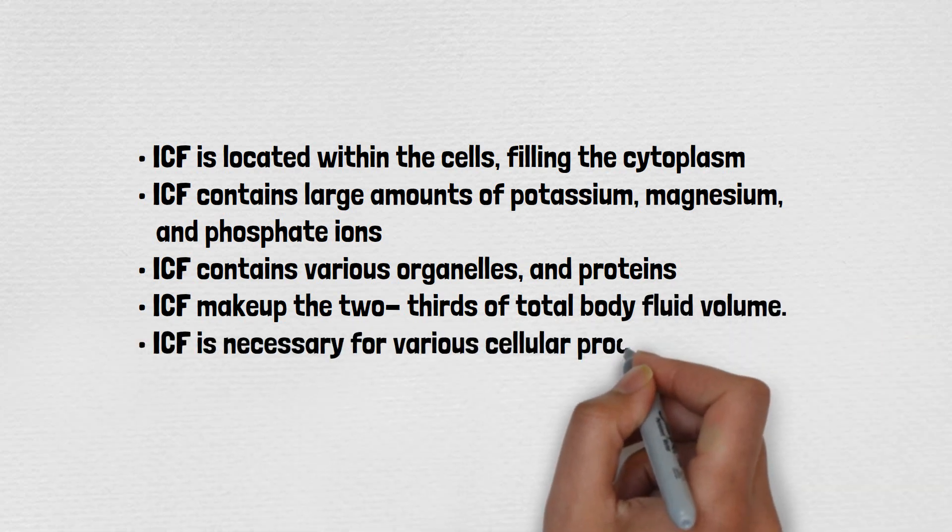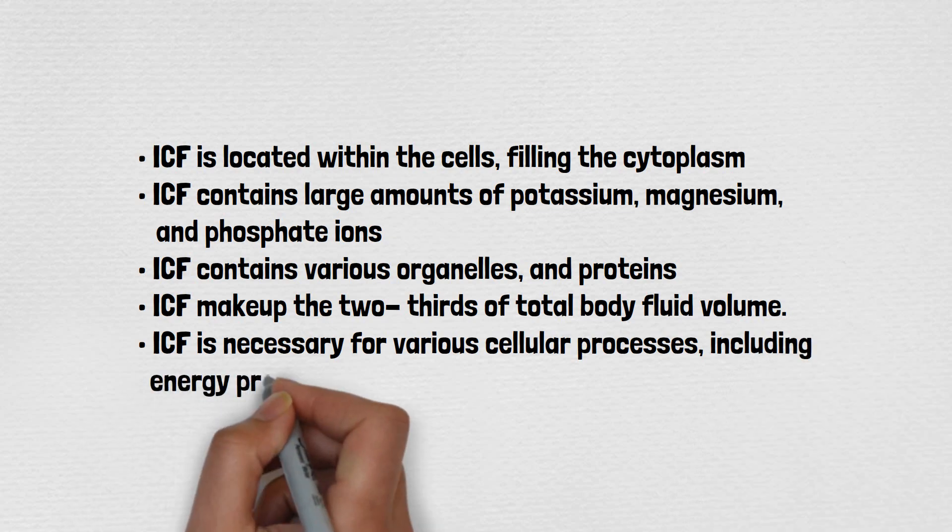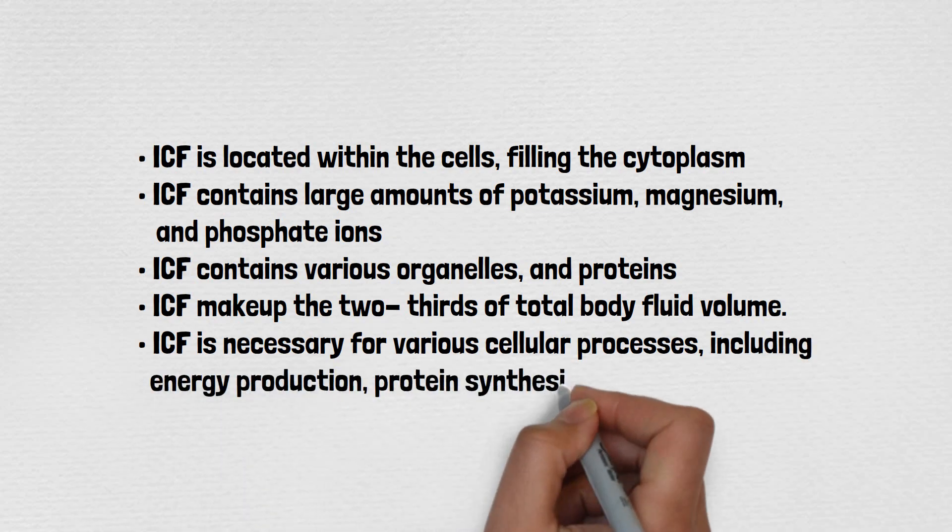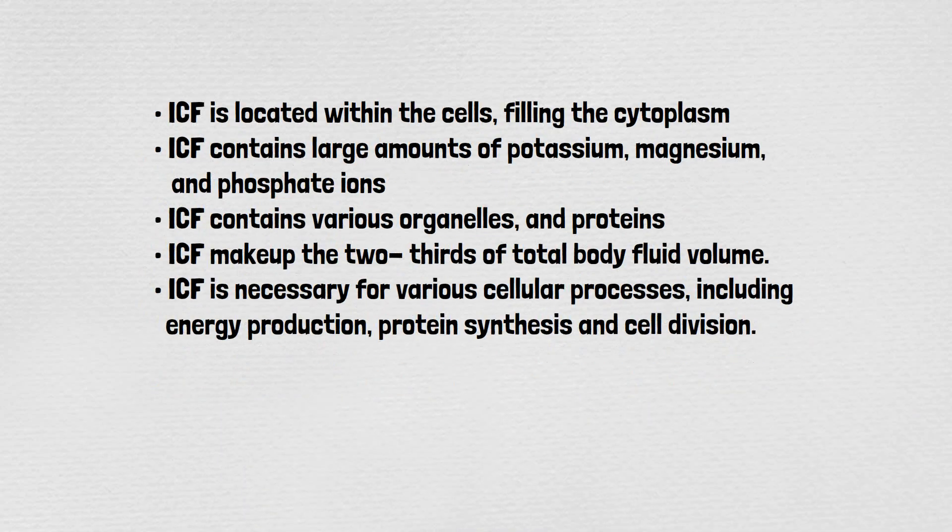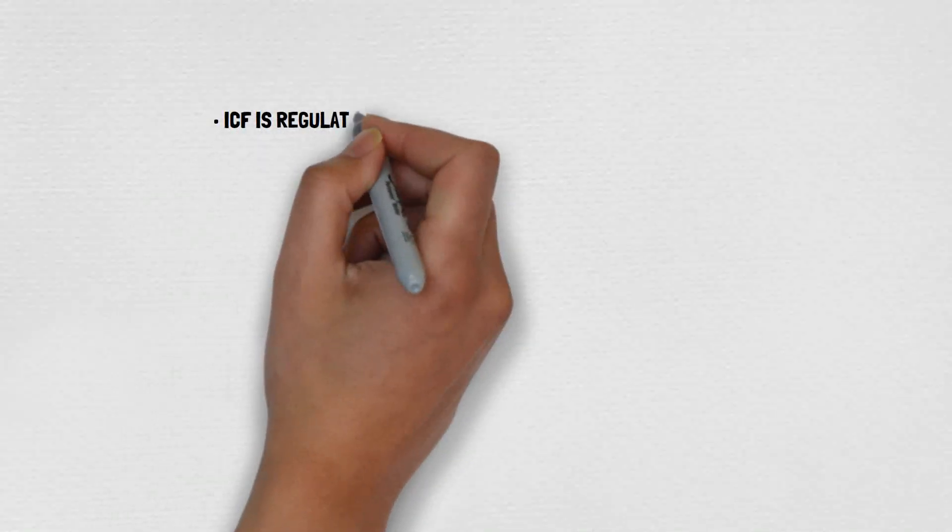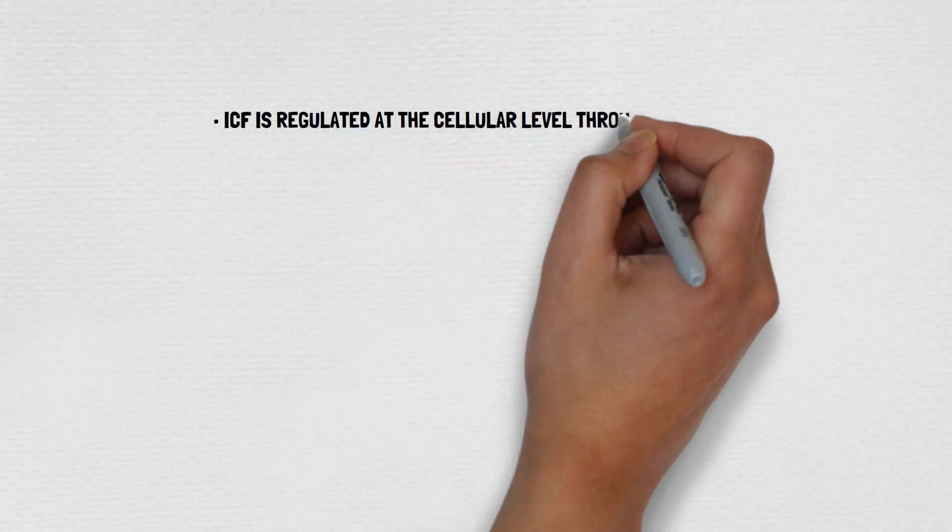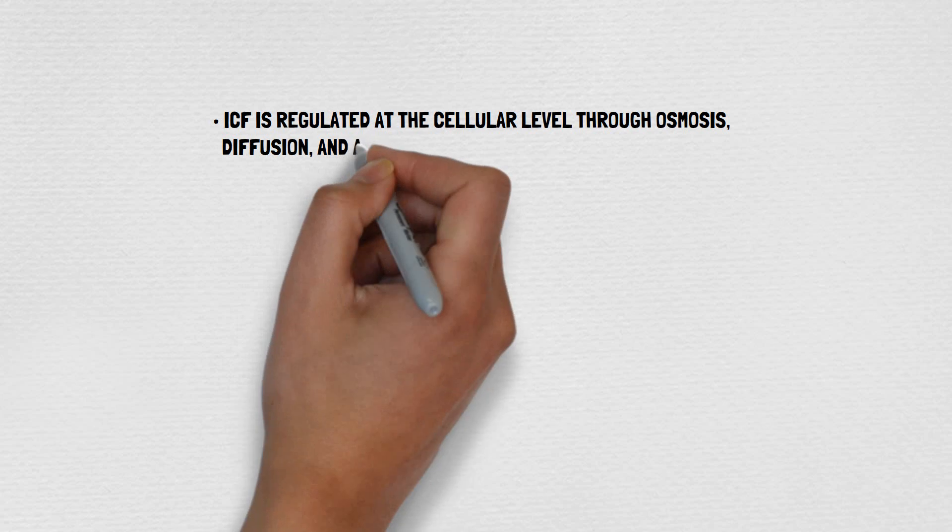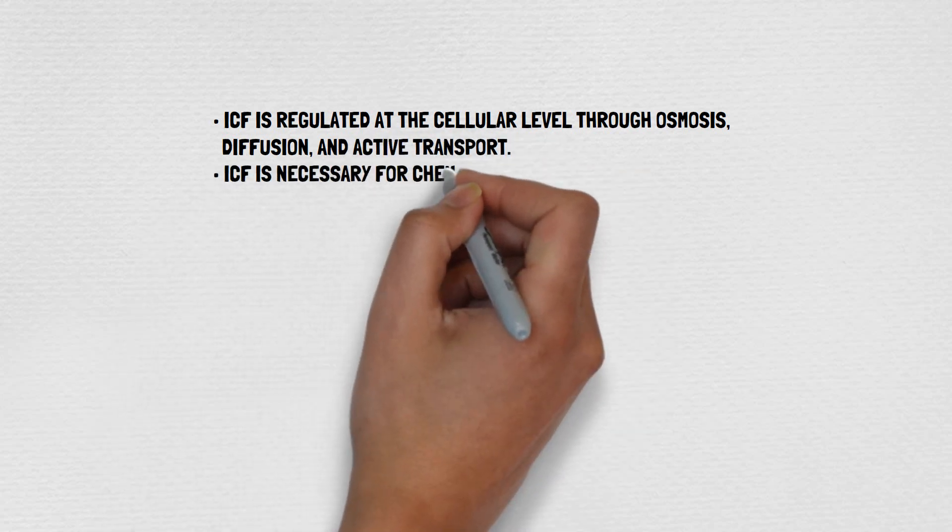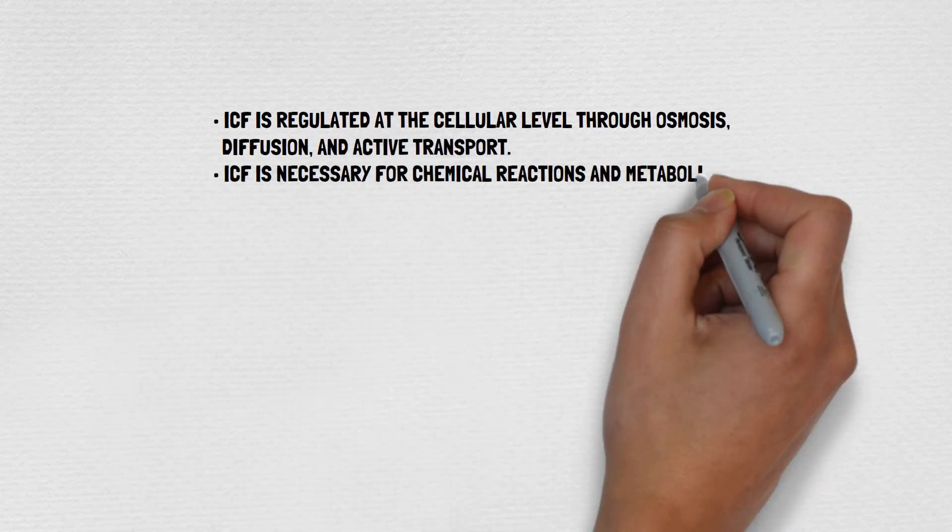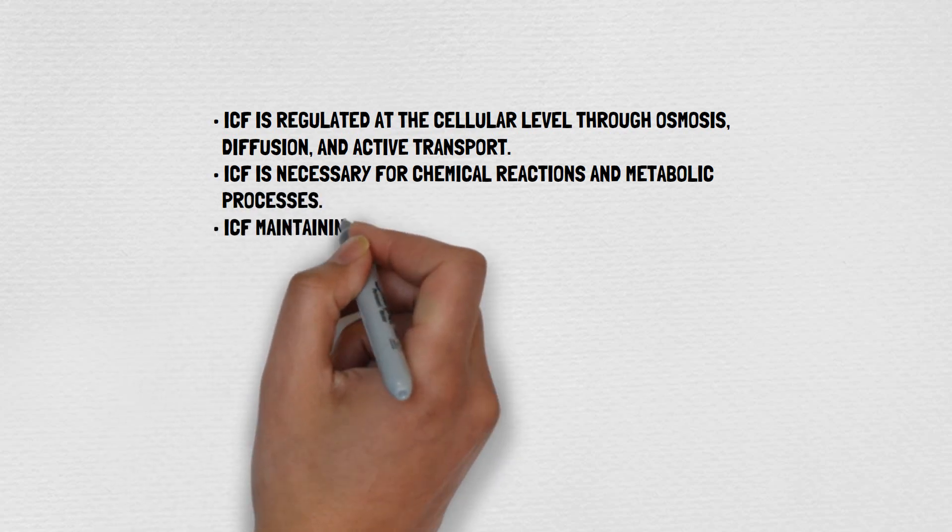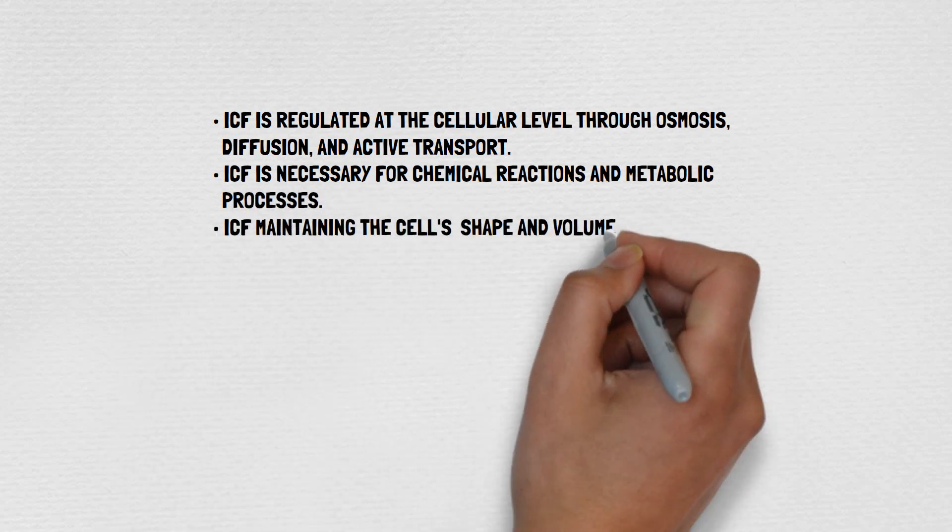ICF is necessary for various cellular processes, including energy production, protein synthesis and cell division. ICF is regulated at the cellular level through osmosis, diffusion and active transport. ICF is necessary for chemical reactions and metabolic processes. ICF maintains the cell's shape and volume through osmotic regulation.